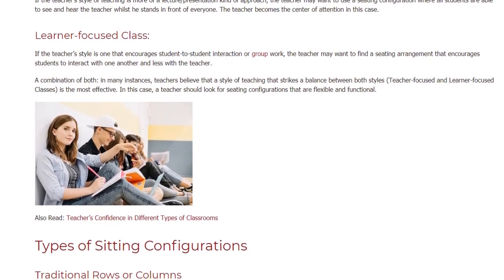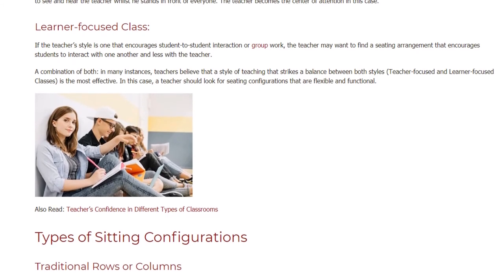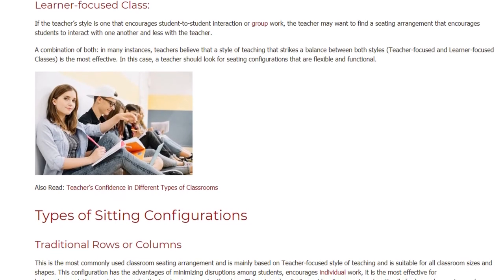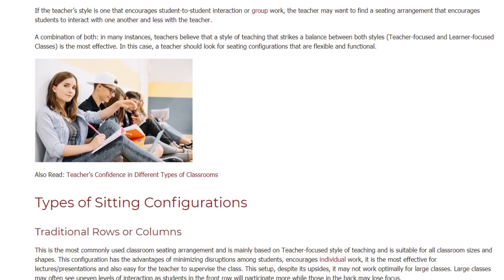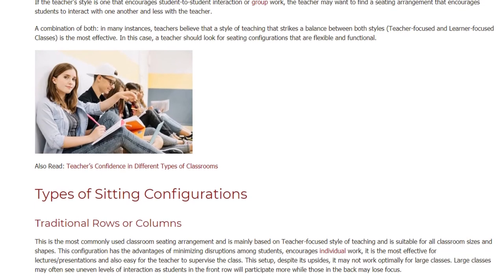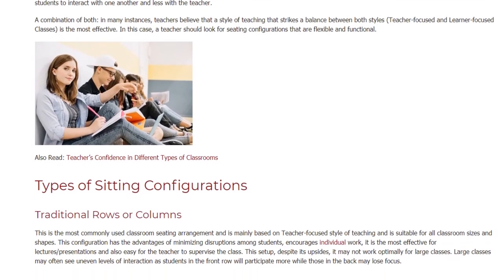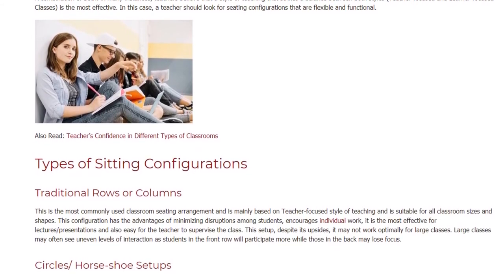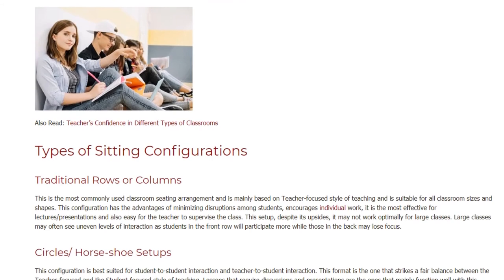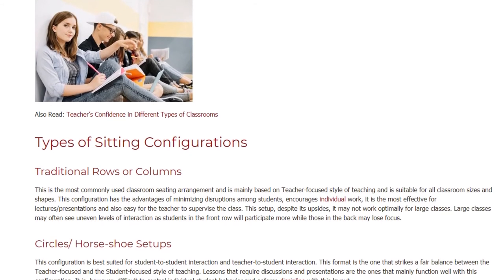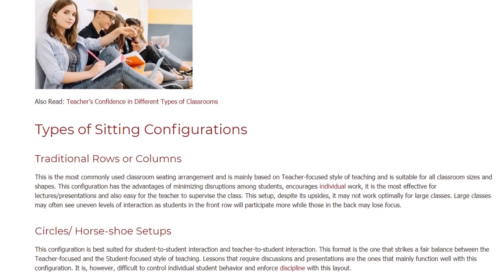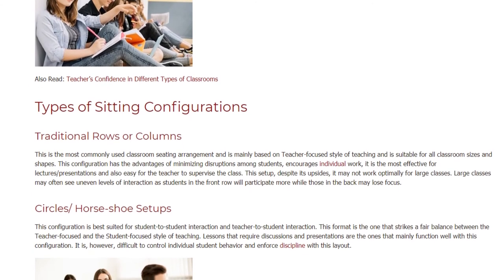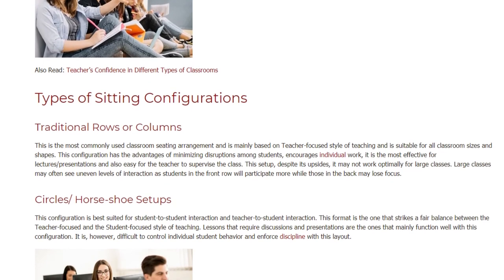Traditional rows or columns: this is the most commonly used classroom seating arrangement, mainly based on a teacher-focused style of teaching, and is suitable for all classroom sizes and shapes. Its advantages include minimizing disruptions among students, encouraging individual work, being the most effective for lectures or presentations, and being easy for the teacher to supervise. However, it may not work optimally for large classes, where students in the front row participate more while those in the back may lose focus.